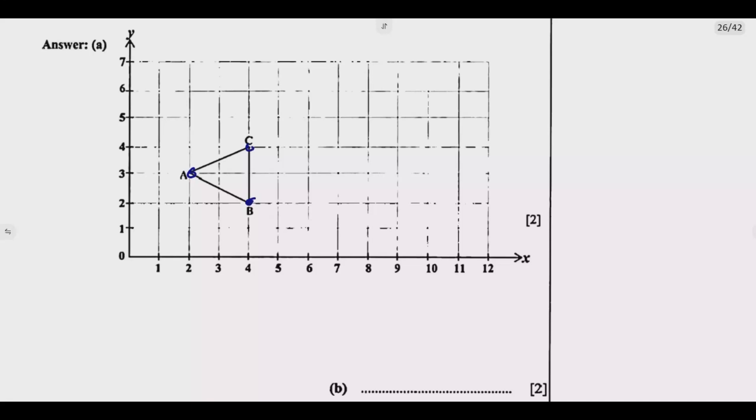Then we are told that the line of reflection is X equals 6, which is in this line. This is the line. So we just draw this line. This one will be X equals 6.